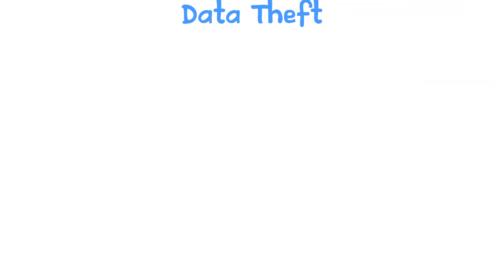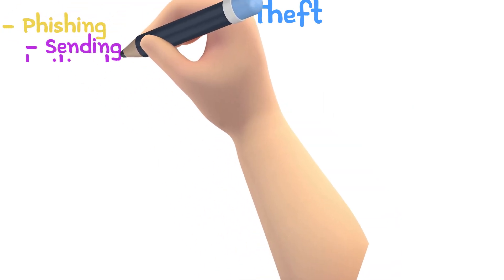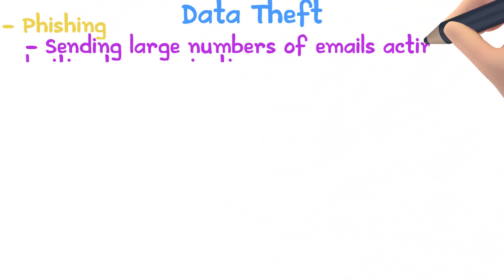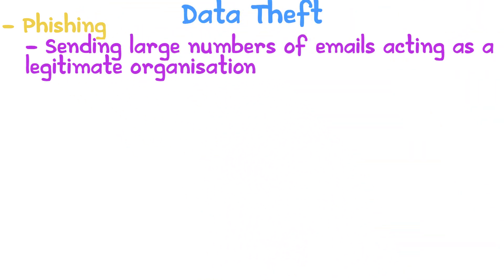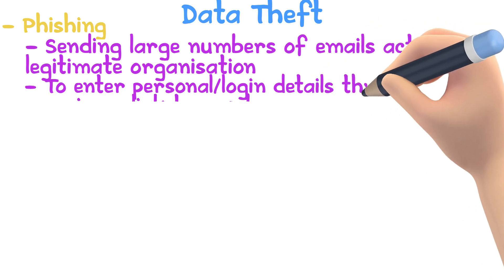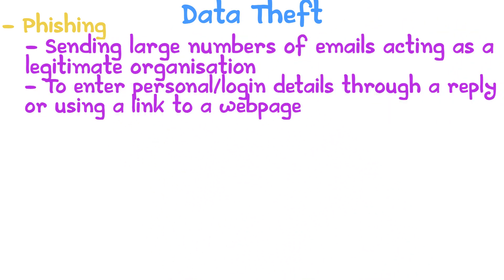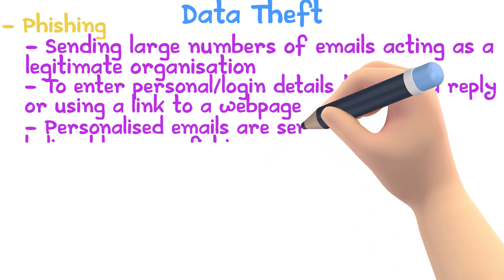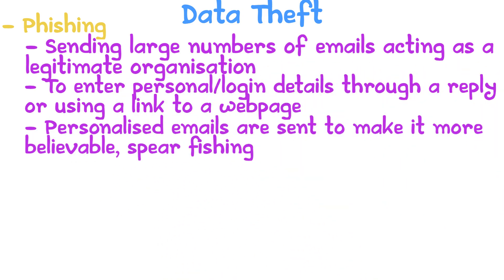Theft of data. Here are the two most common methods used to gain access to data. Phishing involves sending a large number of messages to people acting as a legitimate organization. The emails will ask the user to enter their login or personal details through a reply or through a link to a webpage. A highly personalized phishing email can be sent to make it more believable. This is called spear phishing.